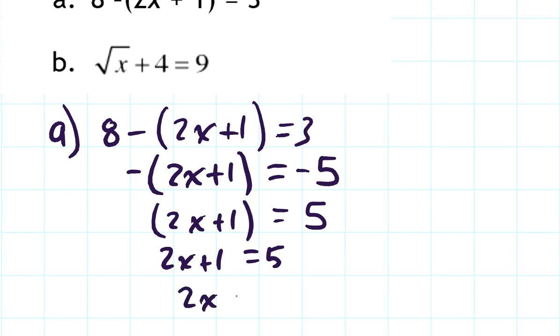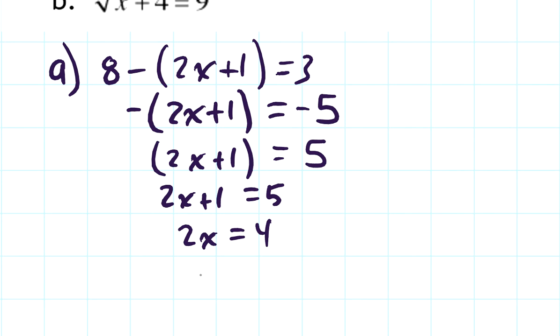Taking away 1 from both sides gives me that 2x is 4, and if I divide both sides by 2, I get that x equals 2.